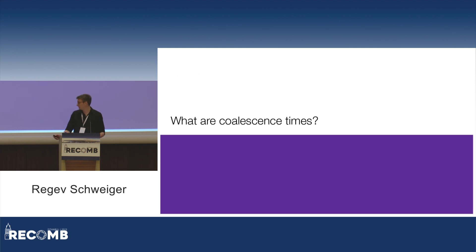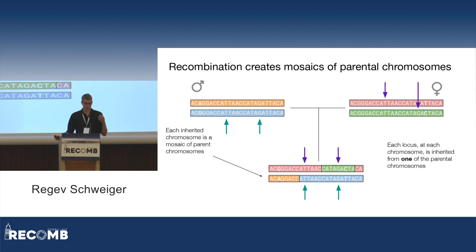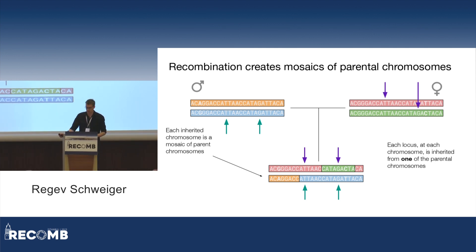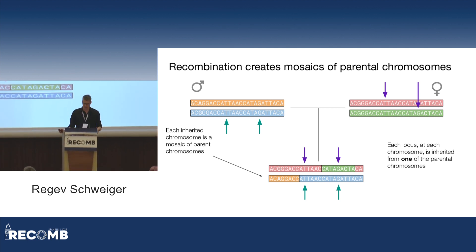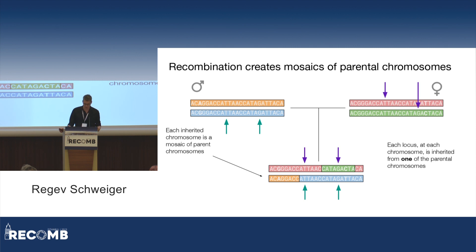So what are coalescence times? Suppose we have a male and female, and they have an offspring, so each chromosome of the offspring is a mosaic of the two chromosomes of the parent. If we look at a specific position in the genome on one chromosome, it comes from one of the parents, say the mother. Because the chromosome is a mosaic, it comes from exactly one of the chromosomes of the mother — the red one in this case.